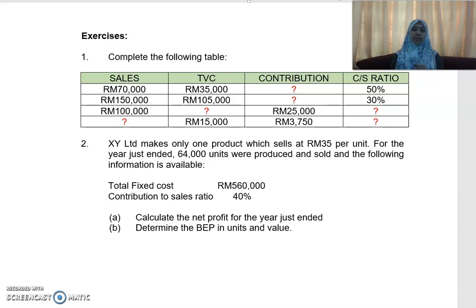Now let's do some exercises. The first one requires you to complete a table. You are given information about sales, total variable cost, contribution, and CS ratio. Some figures are missing, so you are required to fill up the table.